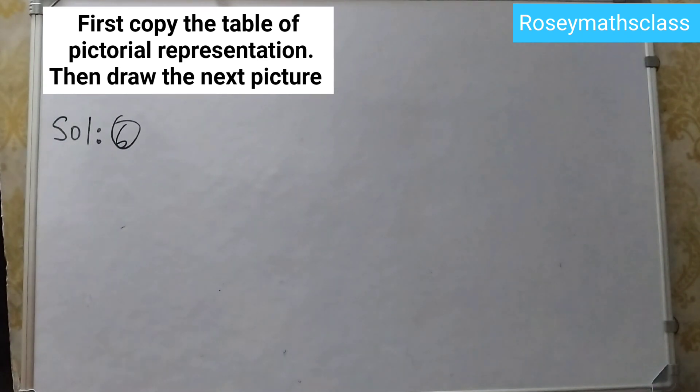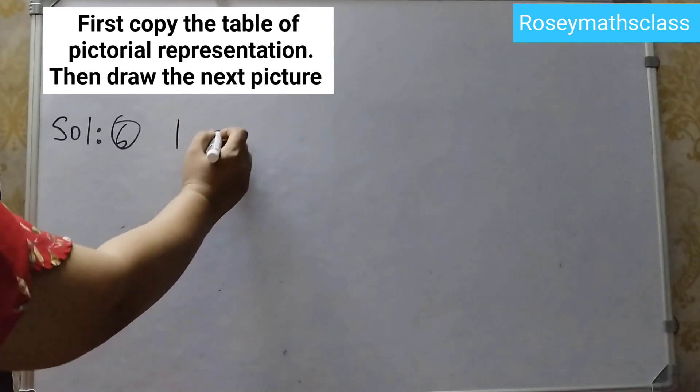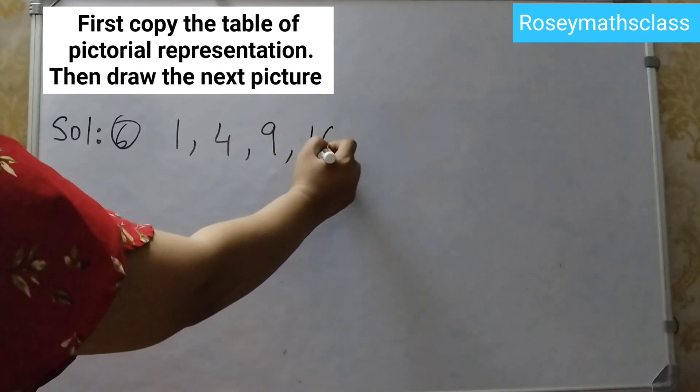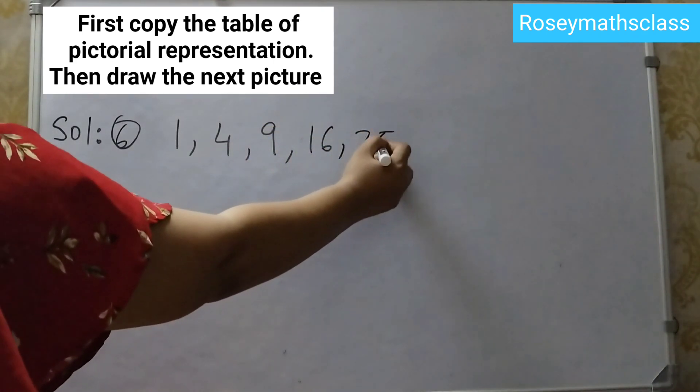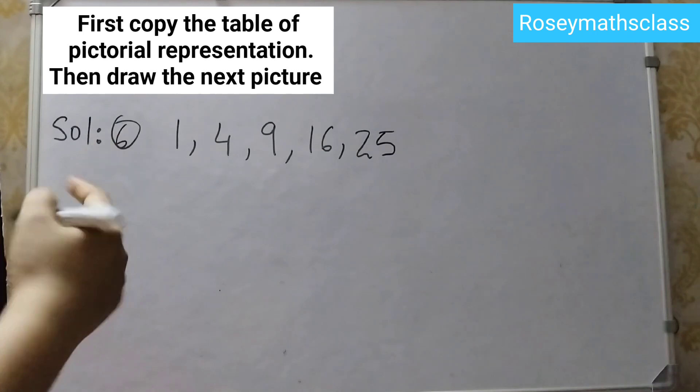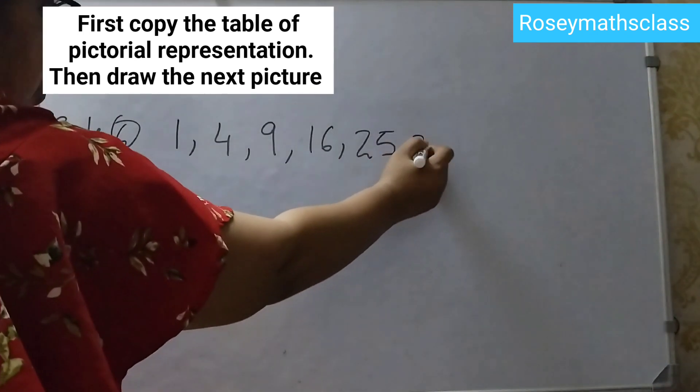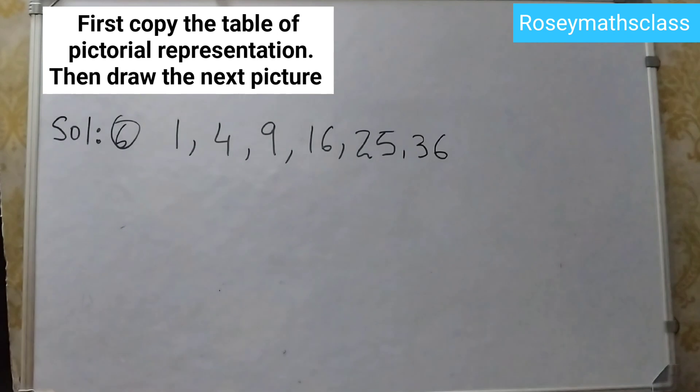Next one is squares. So squares are 1 squared, 2 squared, 3 squared, 4 times 4 is 16, 5 times 5 is 25. It is given till 25, the next one will be 6 into 6, which is 36. So you need to show 36 and for that...